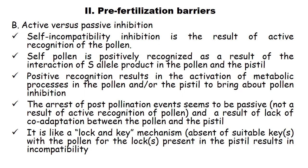The second point in pre-fertilization barriers is active versus passive inhibition. Self-incompatibility inhibition results from active recognition of the pollen; self-pollen is positively recognized through interaction of S-allele products in the pollen and pistil. Positive recognition activates metabolic processes to bring about pollen inhibition. In contrast, arrest of post-pollination events in interspecific crosses seems passive — a result of lack of co-adaptation between pollen and pistil, like a lock-and-key mechanism.